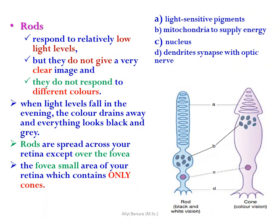Rods respond to relatively low light levels, but they do not give a very clear image and they do not respond to different colors. In low light levels, such as in the evening, color drains away and everything looks black and gray. Rods are spread across your retina except over the fovea — the fovea is a small area of your retina which contains only cones.